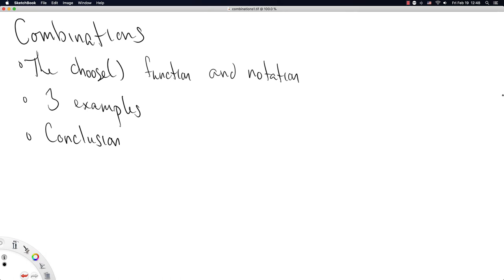This video is going to be about combinations. This is like one step more complicated from permutations. So we're going to first introduce the choose function, which is the function and notation we will use to represent the number of combinations, just like we're often interested in counting permutations. We'll go through three examples and then we'll offer a quick conclusion to place this work in the broader context of counting.